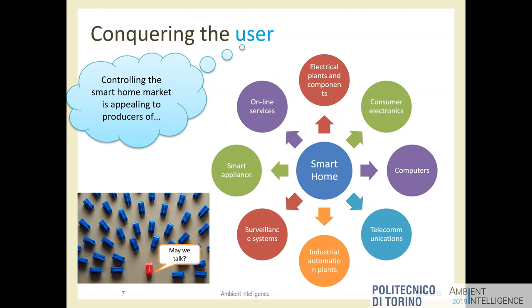Think about the computer industry — they have one big word in mind: interoperability. In the computer industry, it's impossible to buy a computer that can't connect with a USB key, a printer, or a Wi-Fi router of a different brand. That happened 25 years ago, but the computer industry learned its lesson: you can only sell devices if they interoperate 100%.